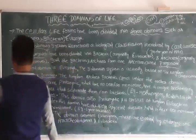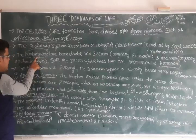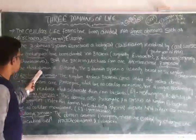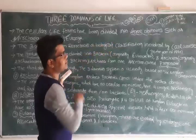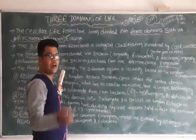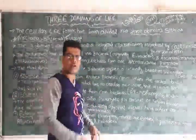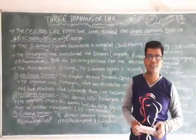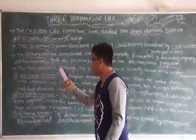The third domain is Eukarya. The third domain, Eukarya, comes under the eukaryotic cell or eukaryotes. This third domain, Eukarya, contains organisms whose cells contain a nucleus.